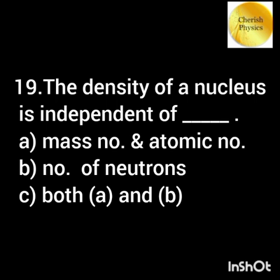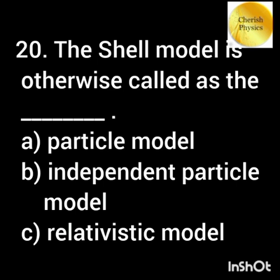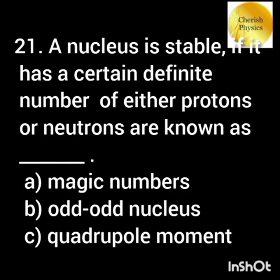The density of the nucleus is independent of mass number. The shell model is otherwise called the magic number model. A nucleus is stable if it has a certain definite number of either protons or neutrons, known as magic numbers.